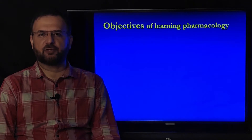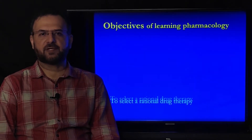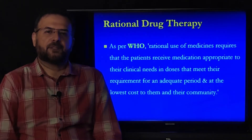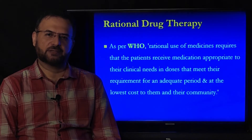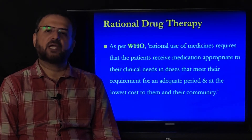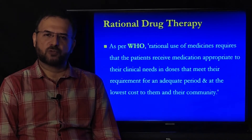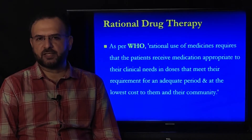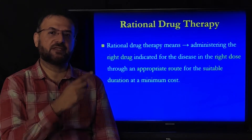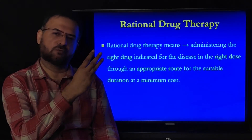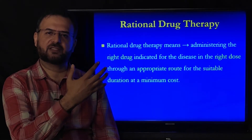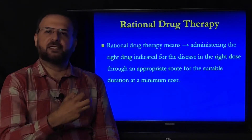Objectives of learning pharmacology: we learn pharmacology to select a rational drug therapy for our patients. As per WHO, rational use of medicines requires that the patient receive medication appropriate to their clinical needs, in doses that meet their requirement, for an adequate period, at the lowest cost to them and their community. Rational drug therapy means administering the right drug for the disease, in the right dose, through an appropriate route, for a suitable duration, at minimum cost — these are the five criteria of rational drug therapy.